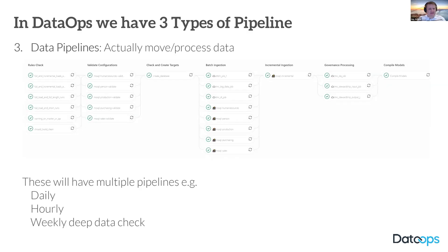The third type is the actual data pipeline, which is where the pipeline itself is moving data from left to right. In practical terms, you probably have multiple pipelines — you might have an hourly one, a daily one. Some customers have massive reference data sets, while others have very intensive testing they wouldn't want to run hourly.